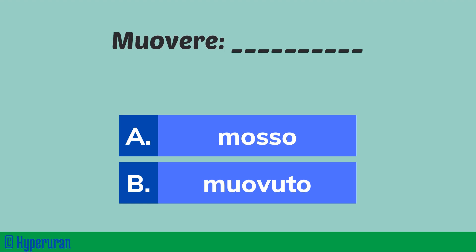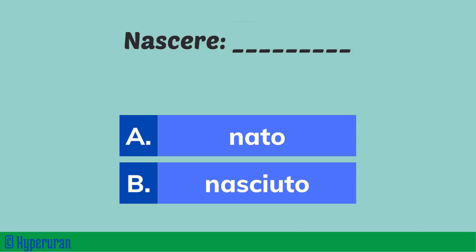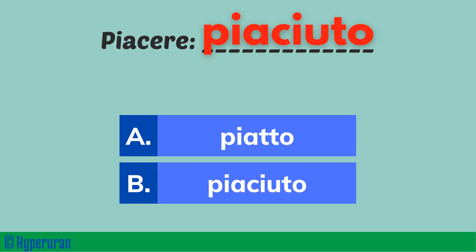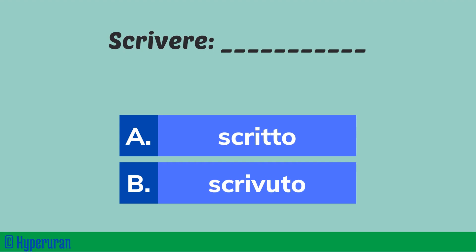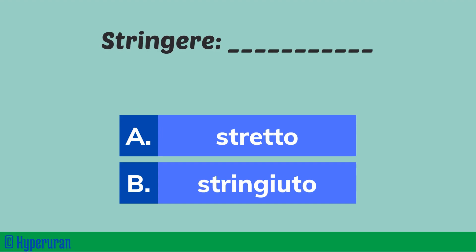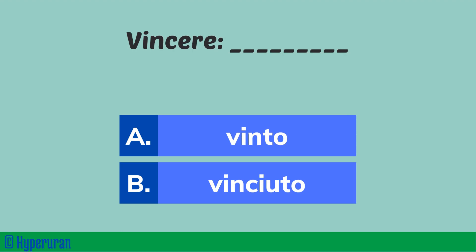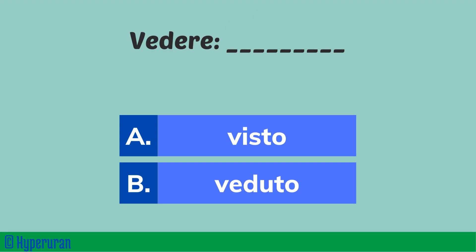Muovere, mosso. Nascere, nato. Piacere, piaciuto. Scrivere, scritto. Stringere, stretto. Vivere, vissuto. Vincere, vinto. Vedere, visto.